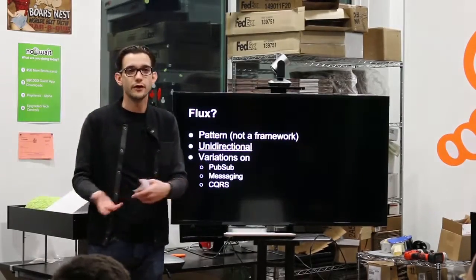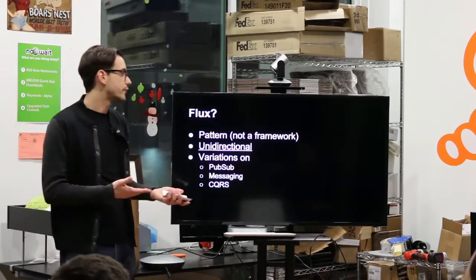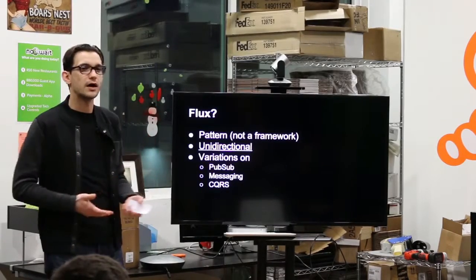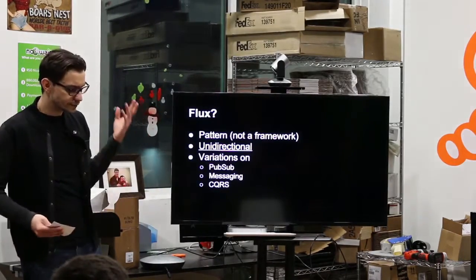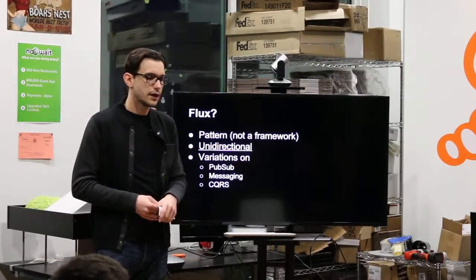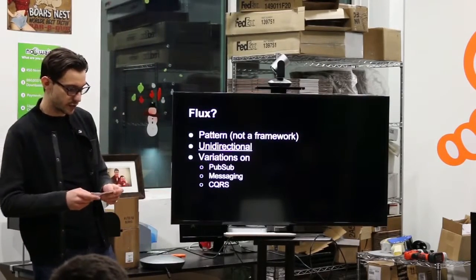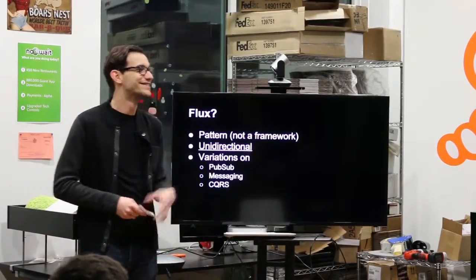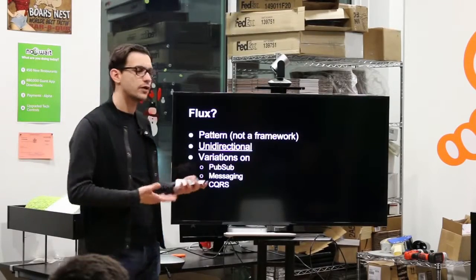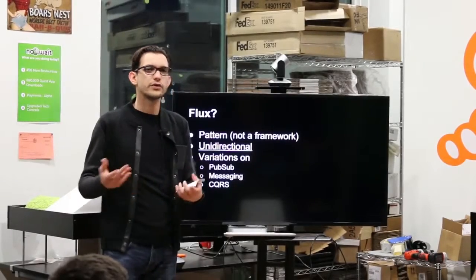React is a JavaScript library that is just a view layer. This library is basically very unidirectional. Everything that comes in, there's just one way data binding. When they were creating Instagram, they saw this pattern emerge and they decided to formalize it and call it Flux.